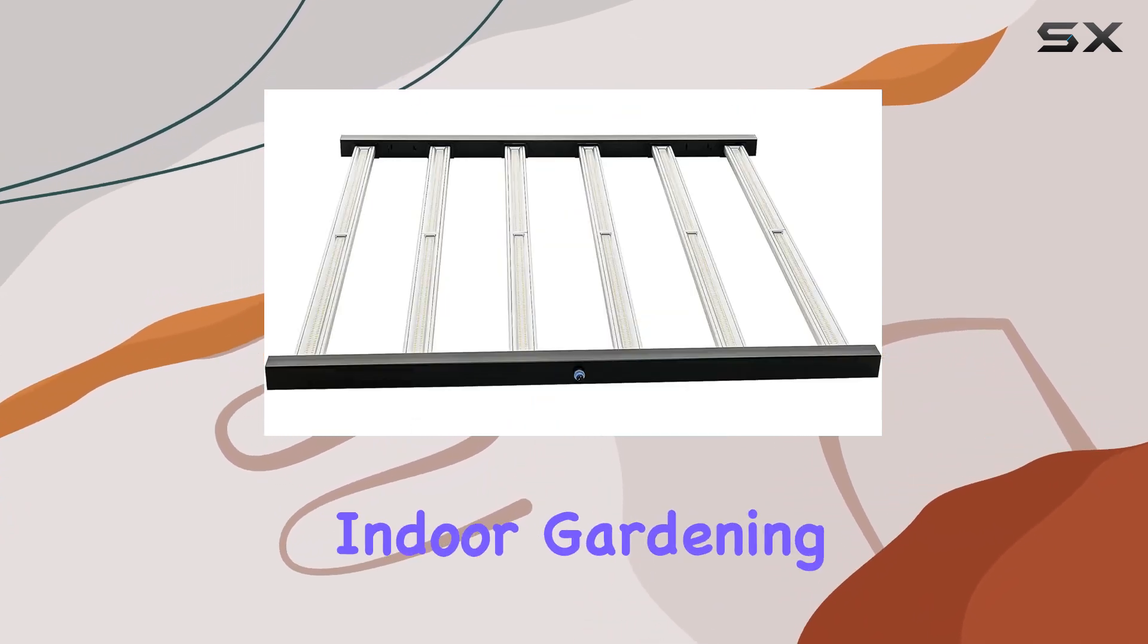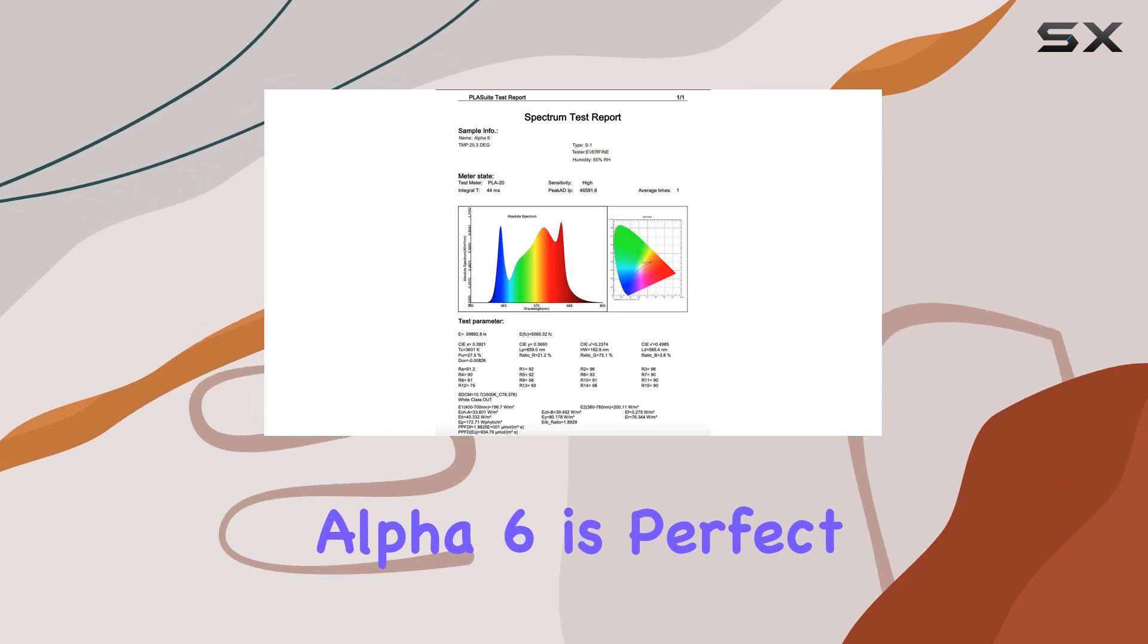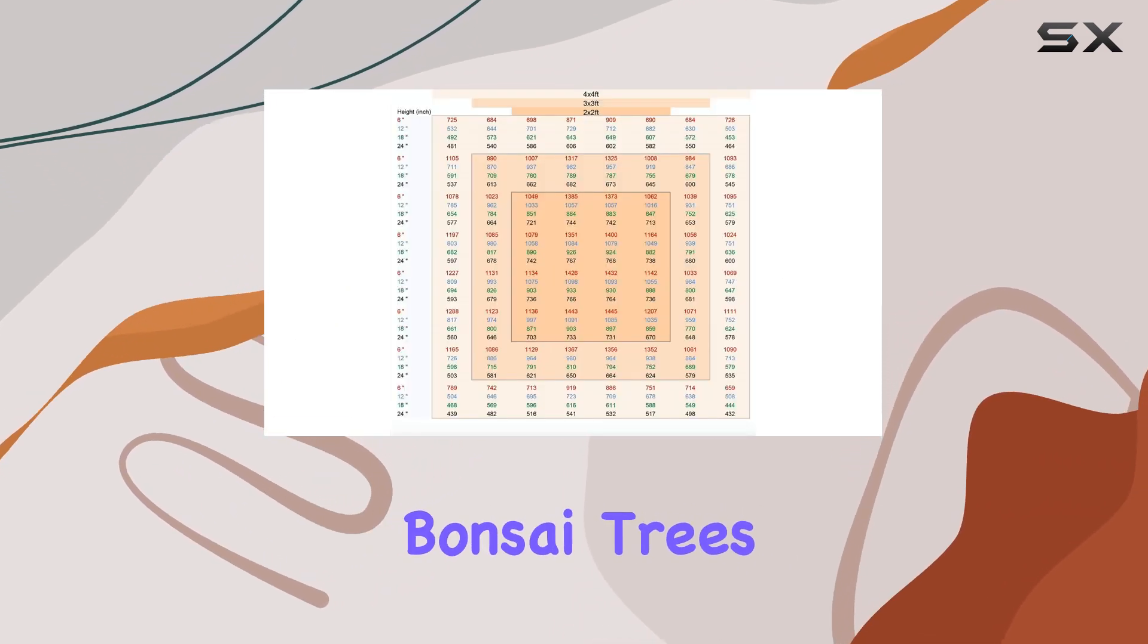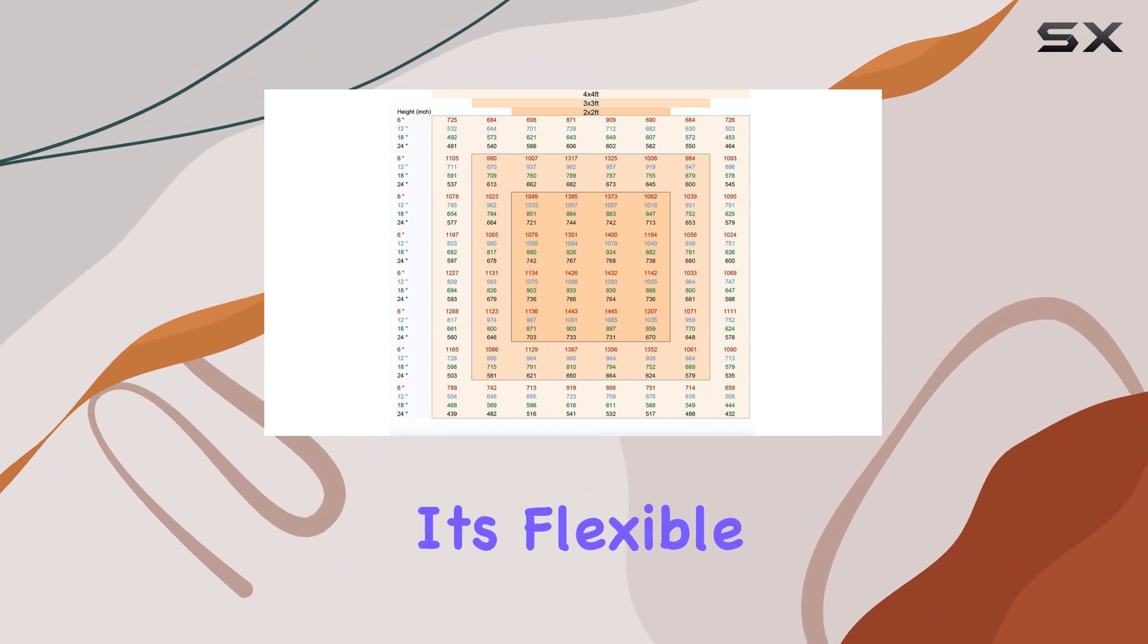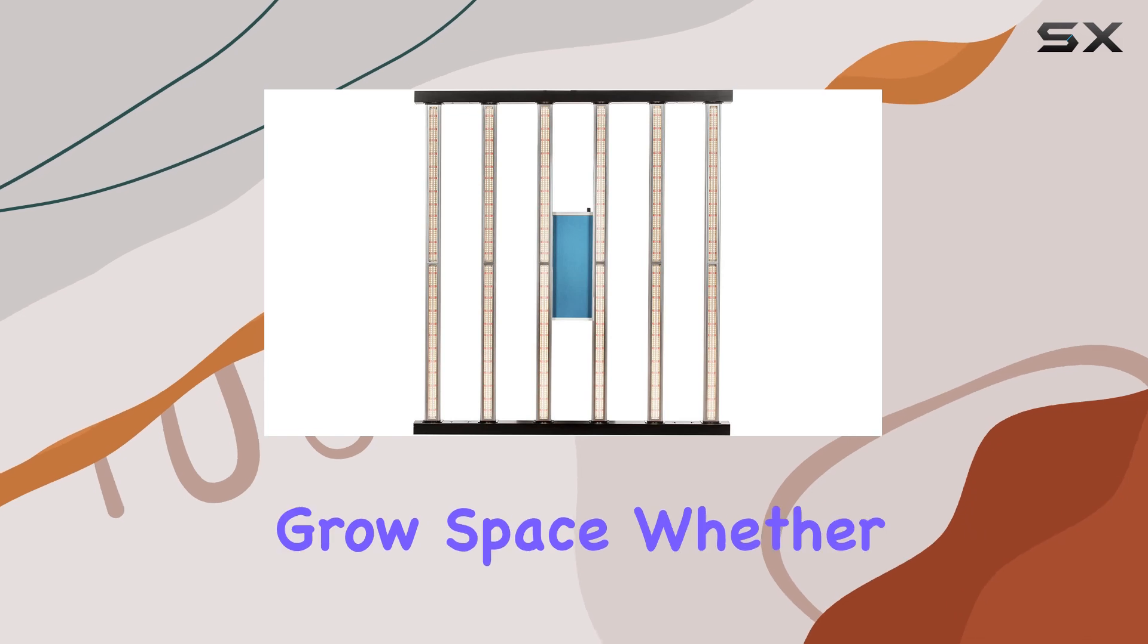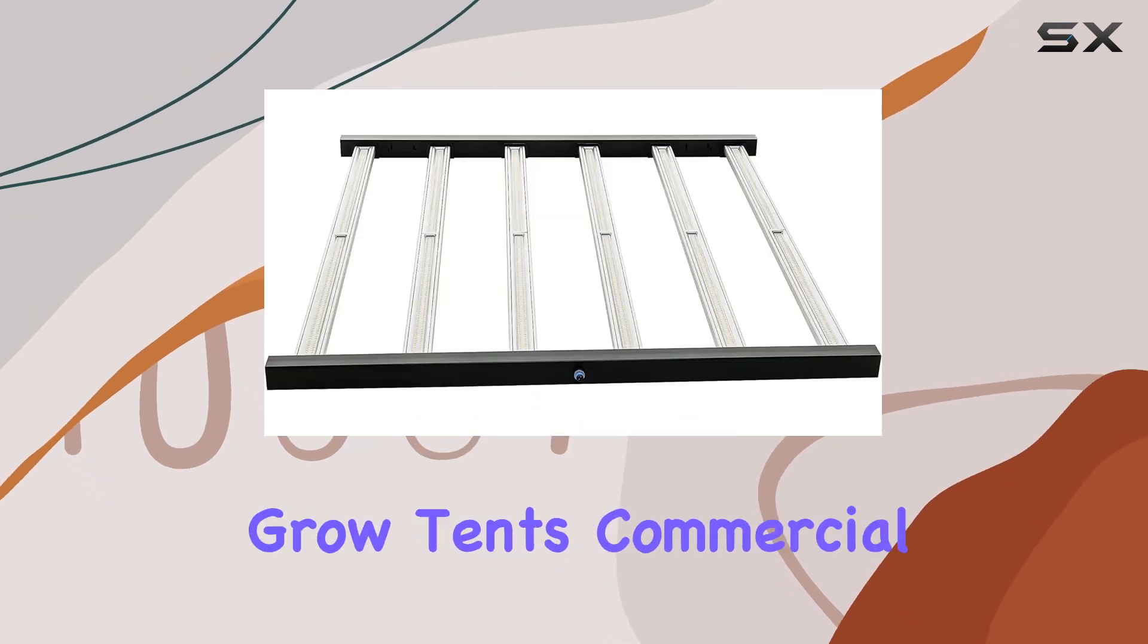Designed to optimize your indoor gardening experience, the Alpha 6 is perfect for a variety of plants, including herbs, flowers, bonsai trees, and vegetables. Its flexible 180-degree design allows you to maximize your grow space.